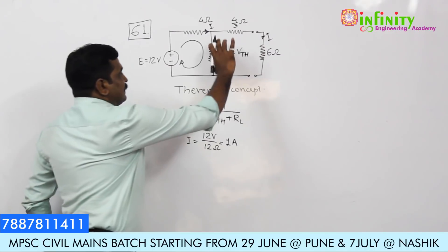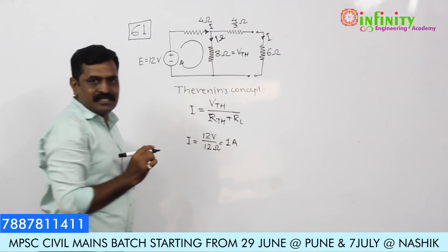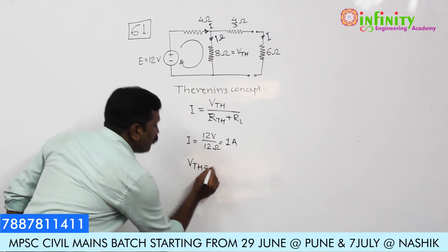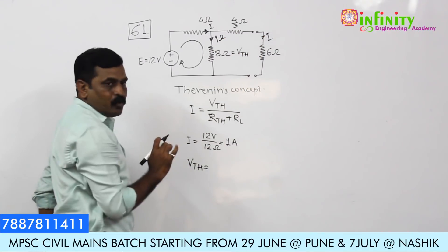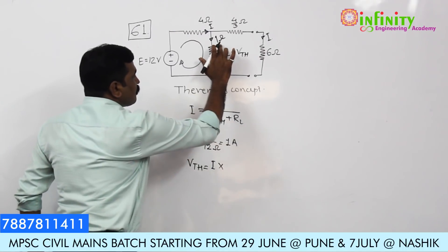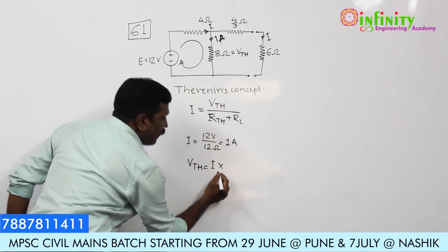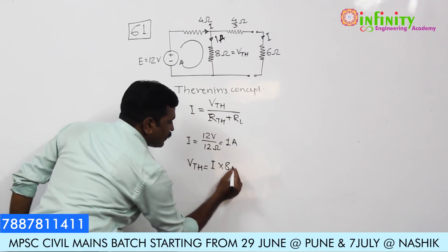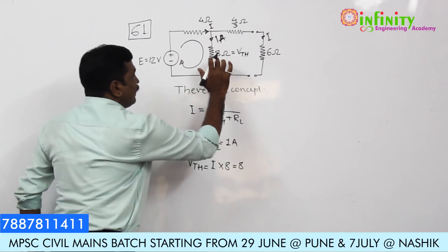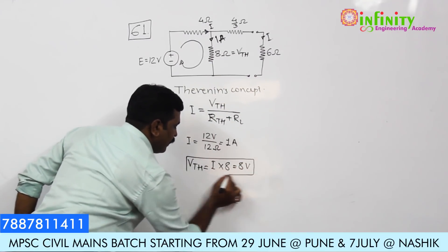We get a total current of 1 ampere flowing through this resistance. Therefore, the Thevenin's voltage Vth is the current flowing through that path — 1 ampere — multiplied by the 8 ohm resistance. So Vth equals 8 volts.